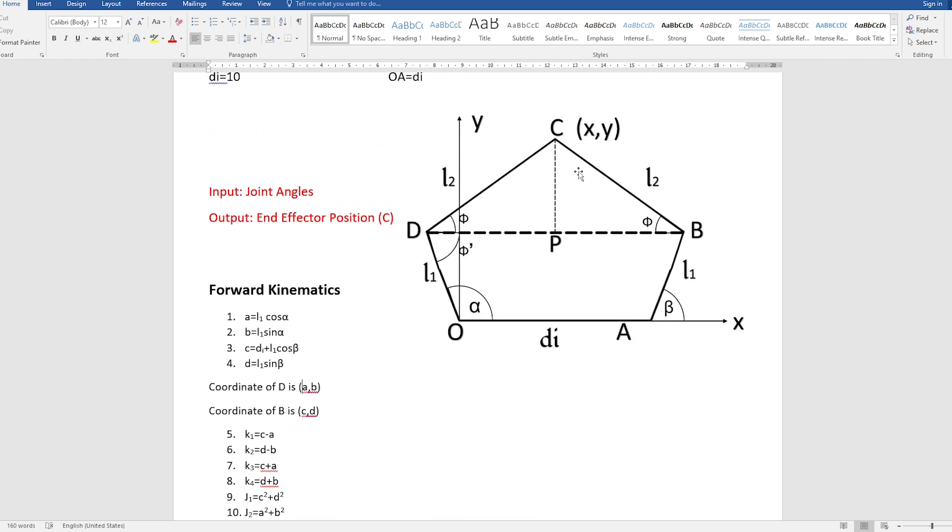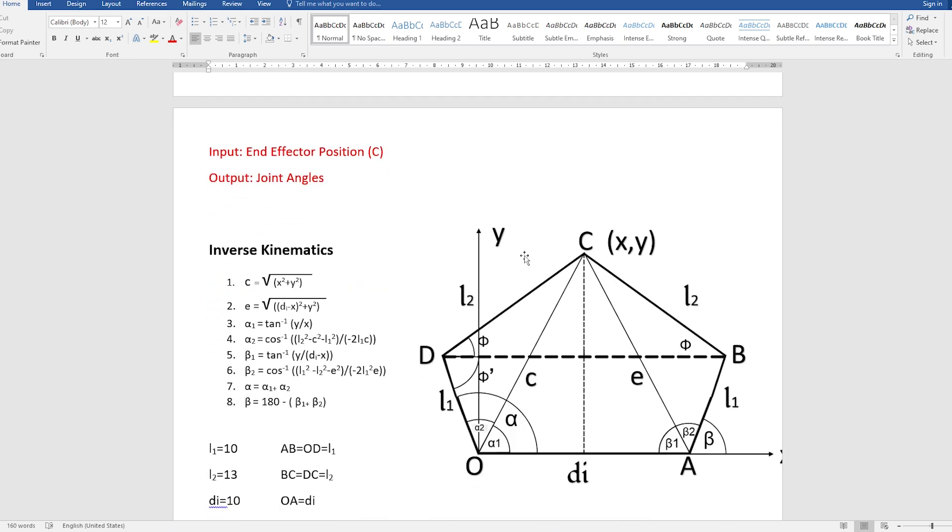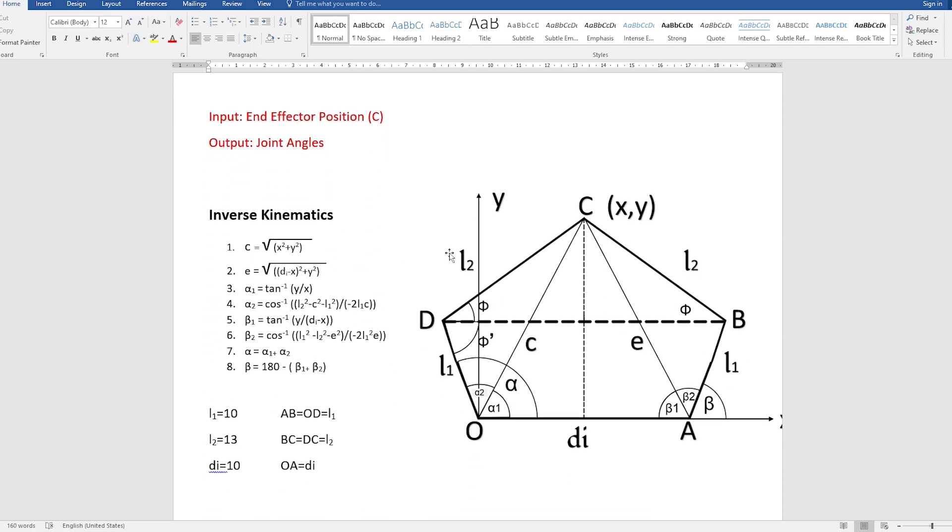In case of inverse kinematics, it is totally opposite. You know the XY position of the end effector and you have to calculate the joint angles. In our case, you know the XY position and you have to calculate the alpha angle and the beta angle. As with forward kinematics, I have calculated all the related equations for this and you can put it in your Python program or Arduino program.